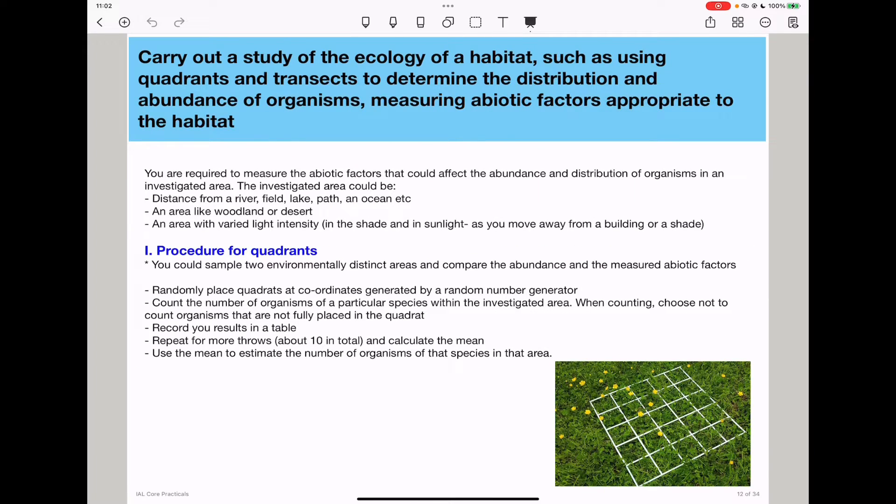The first part is carrying out a study of the ecology of a habitat using quadrats and transects to determine the distribution and abundance of organisms, measuring abiotic factors appropriate to the habitat. You'll measure specific abiotic factors to see how those factors affect the abundance and distribution of specific organisms. For example, if measuring soil pH, you measure the pH and count organisms to see if there is a correlation between pH changes and the abundance and distribution of the organisms.